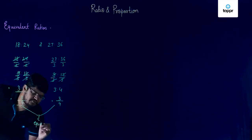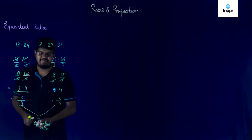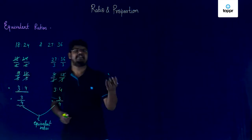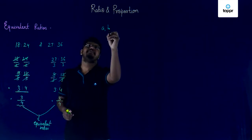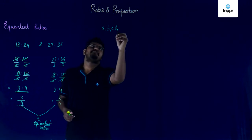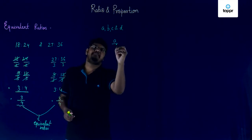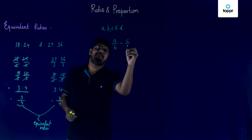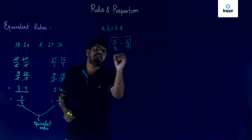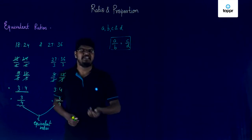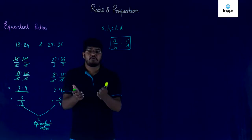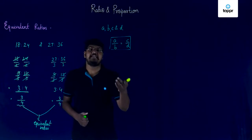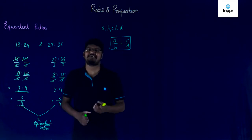Two ratios can only be considered as equivalent ratios if upon simplification they reduce to a same value. This means that if I have four quantities A, B, C and D such that A by B is equal to C by D, then the ratios A by B and C by D are considered to be equivalent to each other. To determine whether two ratios are equivalent or not, we need to follow some simple steps.